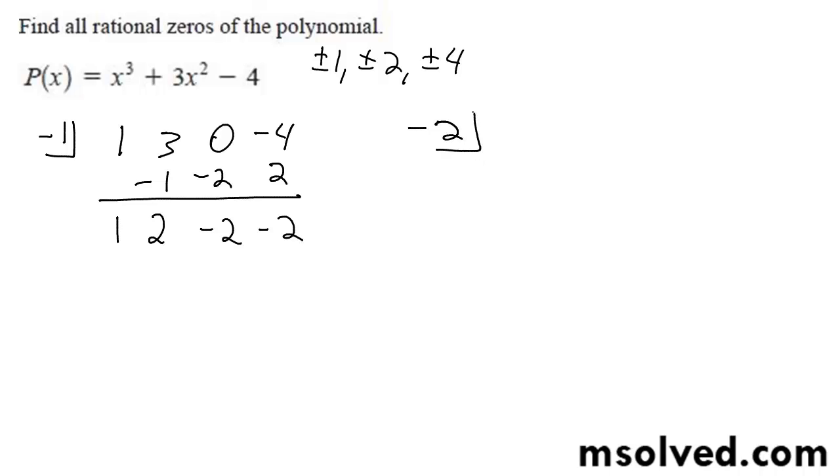I'm going to guess it's probably going to be negative 2, or 2. Alright, so, 1, 3, 0, negative 4. Alright, so, 1, negative 2, 1, negative 2, negative 2, becomes 4, becomes 0. Okay, good. So, this means negative 2 is a solution.